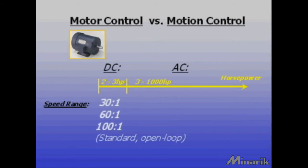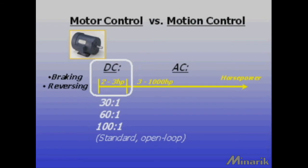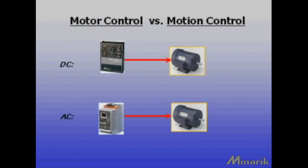Above 3 horsepower, DC motor cost increases quickly, but superior open loop speed range, braking, and reversing makes DC a good choice for small horsepower variable speed applications. AC or DC performance can also be improved by using higher cost drives and feedback devices.